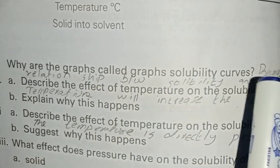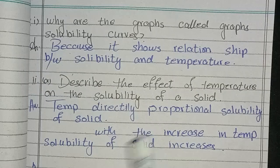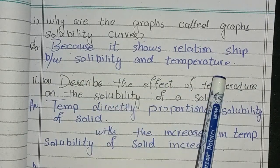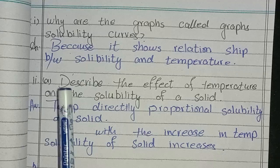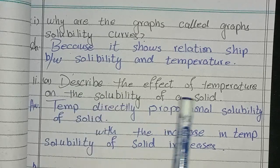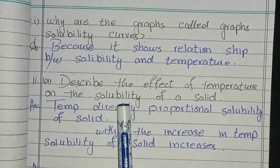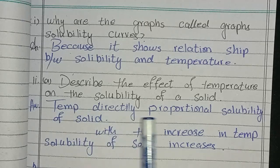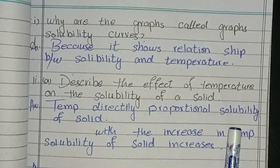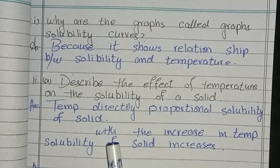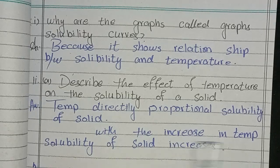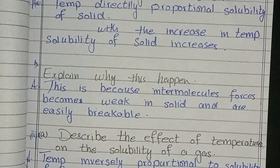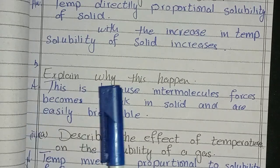Answer: because it shows relationship between solubility and temperature. Part A: Describe the effect of temperature on the solubility of a solid. Temperature is directly proportional to solubility of solid. With the increase in temperature, solubility of solid increases. Part B: Explain why this happens. This is because intermolecular forces become weak in solid and are easily breakable.